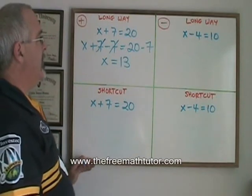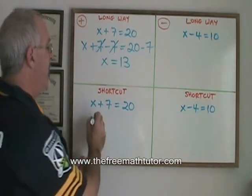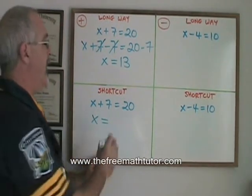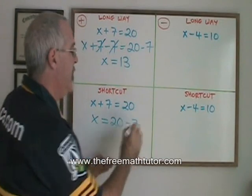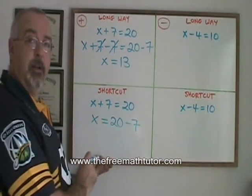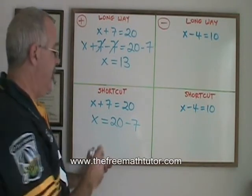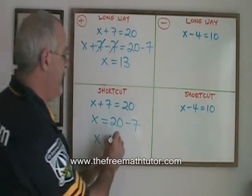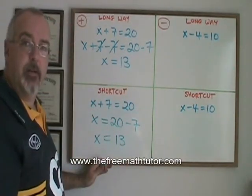With the shortcut, I don't bother showing that I'm subtracting 7 from the left side. I isolate my x and subtract a 7 from the right side. I'm still really subtracting a 7 from both sides, but the 7s on the left are canceling and I don't have to show it. x is therefore equal to 20 minus 7, which is 13. It's the same answer, and it's the correct answer.